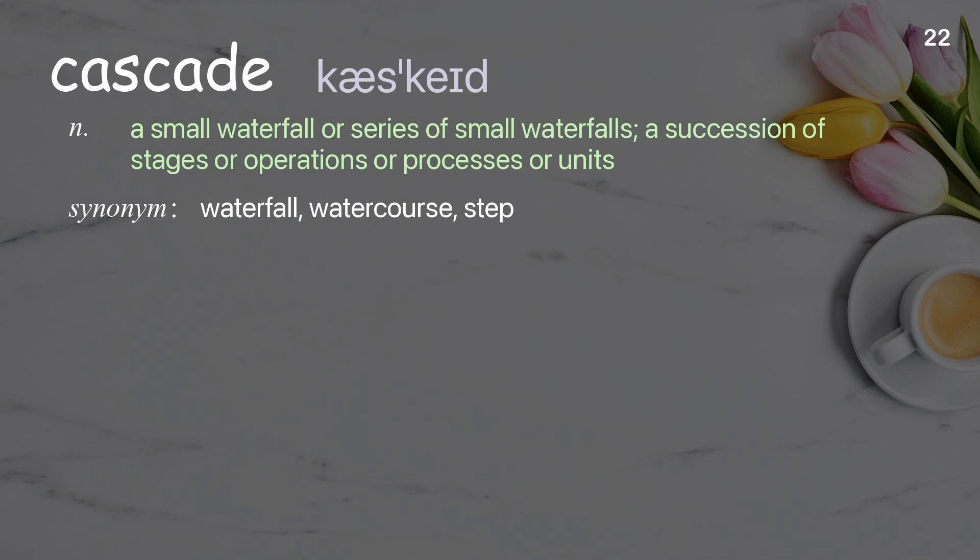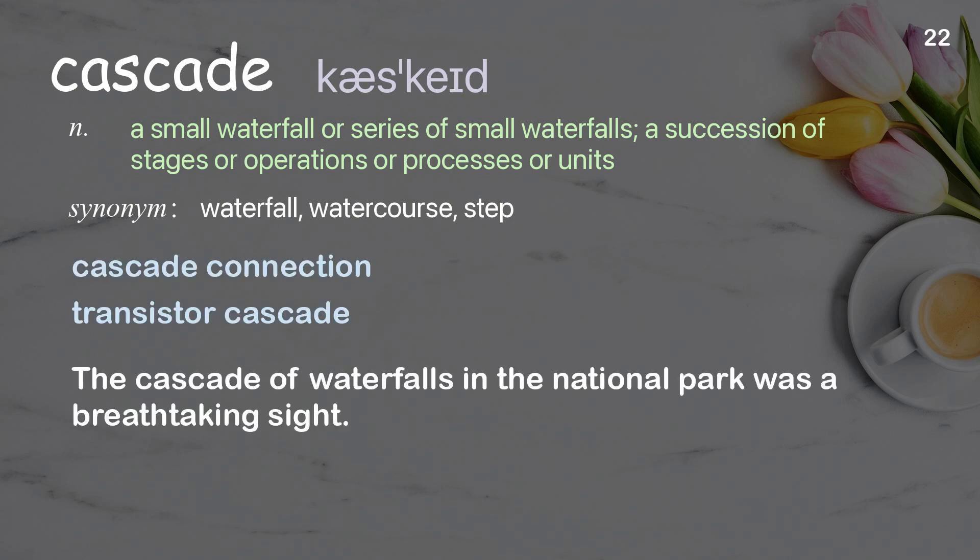Cascade. A small waterfall or series of small waterfalls; a succession of stages or operations or processes or units. Examples: Cascade connection. Transistor cascade. The cascade of waterfalls in the national park was a breathtaking sight.